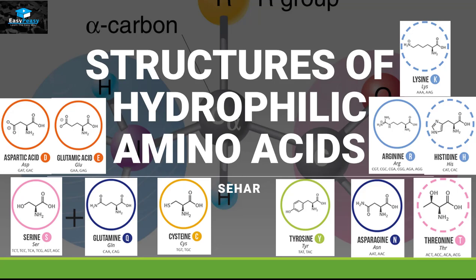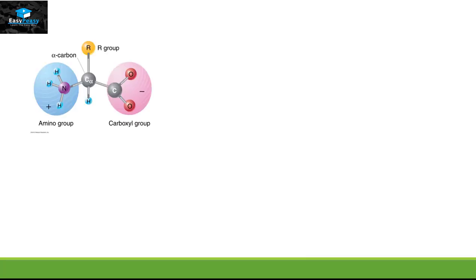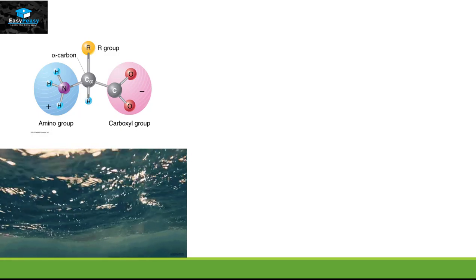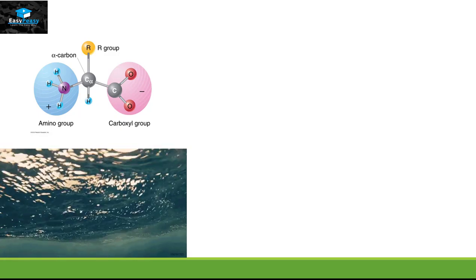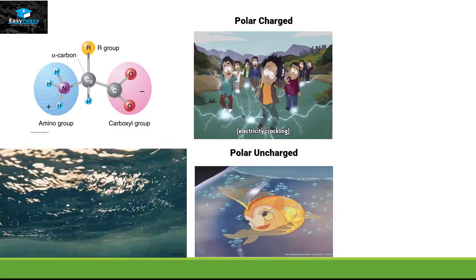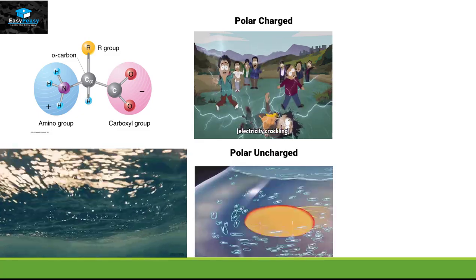Hello, this is Sahir from EZPZ and the topic we are going to discuss today is called structures of hydrophilic amino acids. Hydrophilic amino acids are those amino acids which are water loving. We have two different types of categories: polar charged amino acids and polar uncharged amino acids.